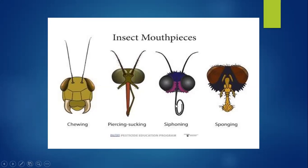There is a siphon-like structure in certain insects such as butterflies, which helps in siphoning — taking food in the form of nectar. Sponging type of feeding is seen in certain kinds of flies. So mouthparts are modified according to their food habit.